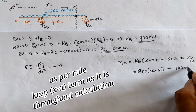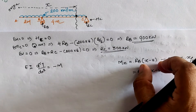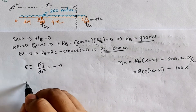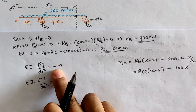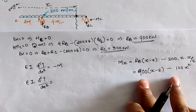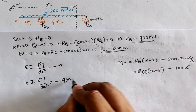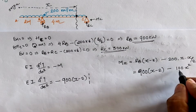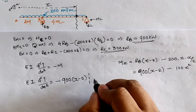Using Macaulay's method, we keep the bracket term as (x − 2). Substituting into the elastic equation EI d²y/dx² = −M: the term −900(x − 2) becomes −900(x − 2), and −(−100x²) becomes +100x². All moment terms are separated by three-dot lines as required by the method.